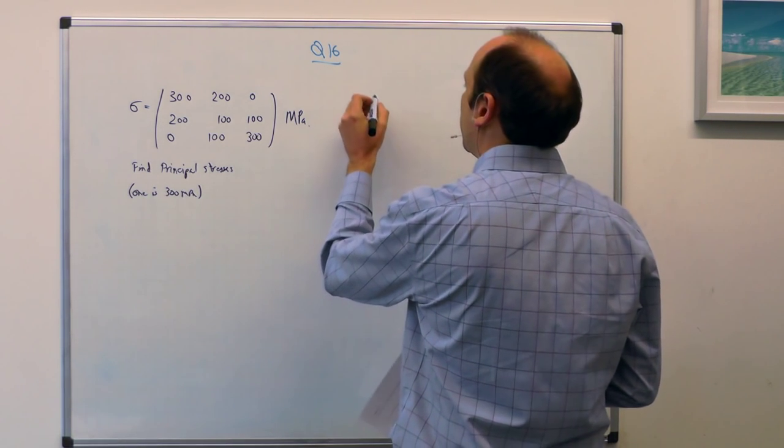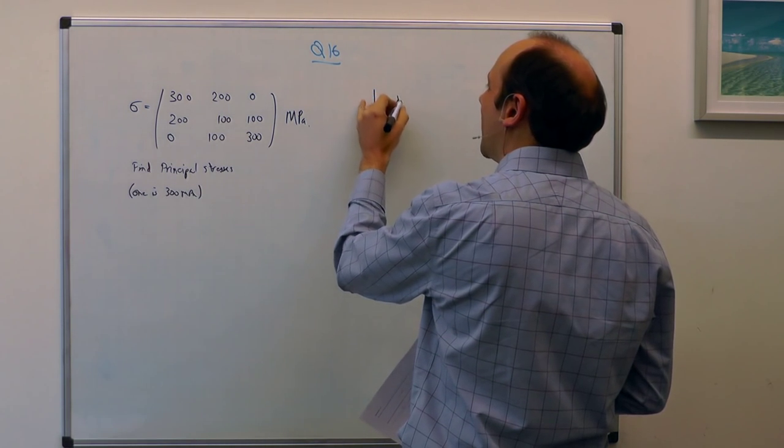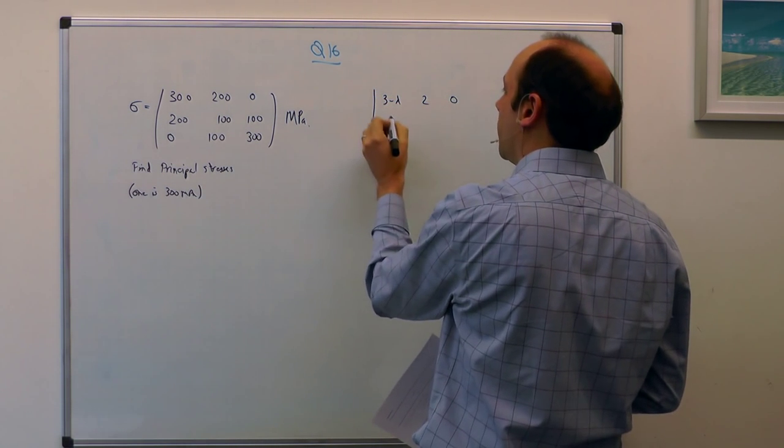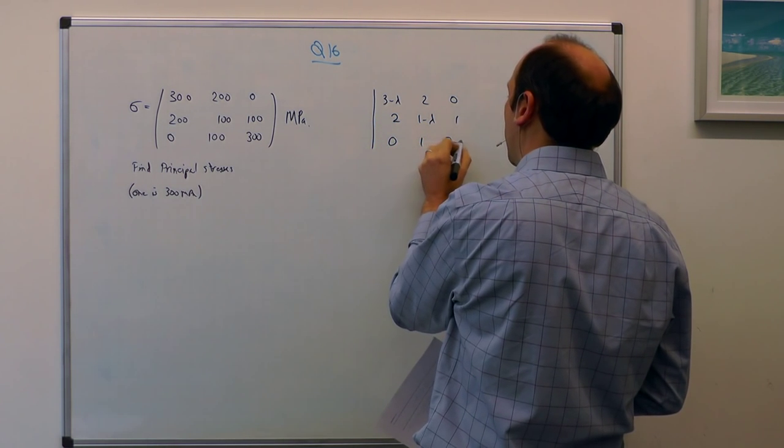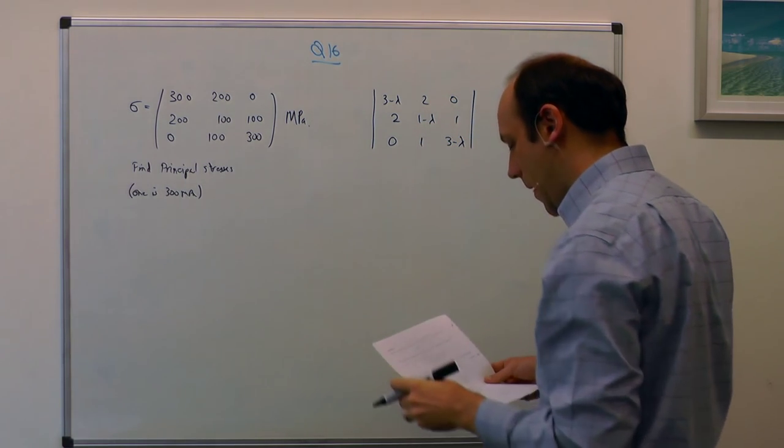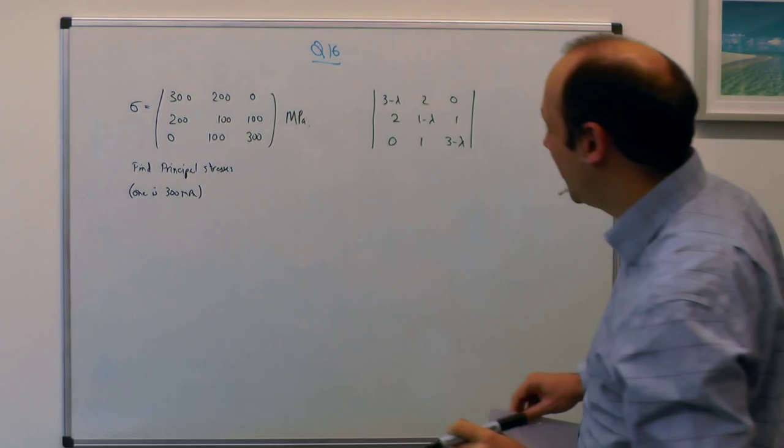So I am going to find the eigenvalues by finding the determinant of 3 minus lambda, 2, 0, 2, 1 minus lambda, 1, 0, 1, 3 minus lambda. And we have got to remember to put the factor of 100 back in later, of course.